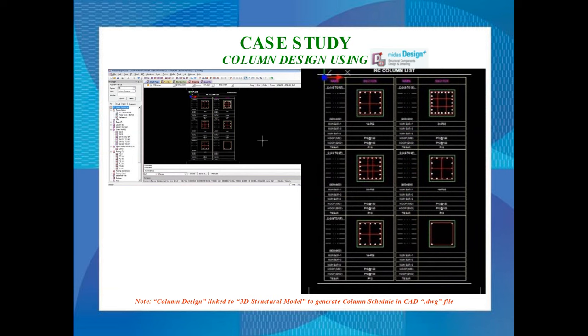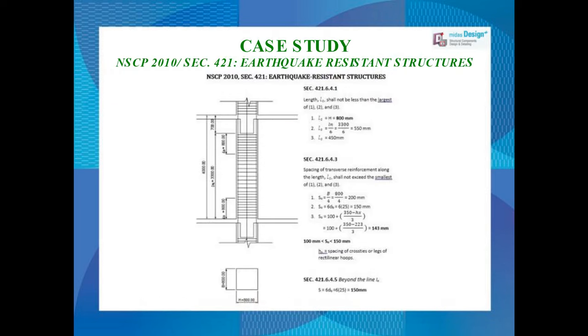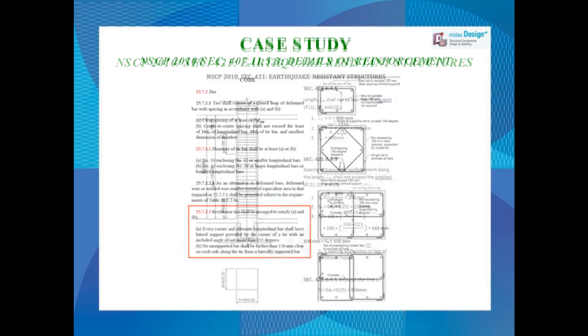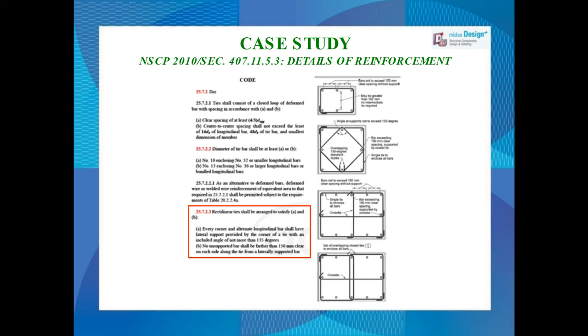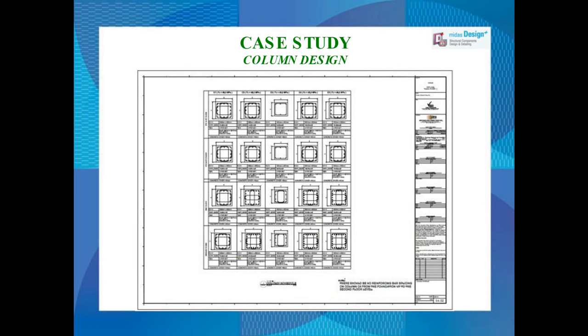Columns can also be designed using Midas Design Plus. You can easily generate the column cross section with ties by automatically linking Design Plus with your 3D structural model. You can then check the ductility requirements using NSCP 2010 Section 421 for earthquake-resistant design, and also check the spacing of reinforcing bars per Section 407.11.5(e). The output file can be exported directly to your CAD file to arrange within your standard title block.